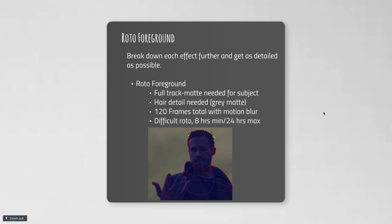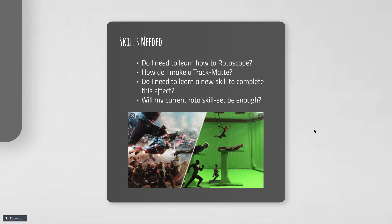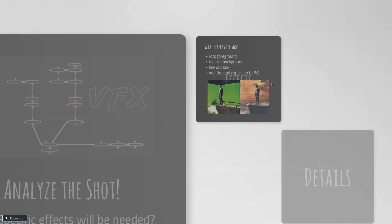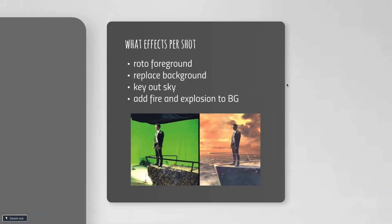I need to figure out how long it's going to take me to complete that roto. It's good to start figuring out how long it takes you to do specific effects — that's key to making sure you're able to meet whatever deadline you're setting, even if it's just a deadline for yourself. Then there's skills: Do I need to learn how to rotoscope? Do I know what a track matte is? Do I need to learn an entirely new skill? You need to know what skills are needed for each shot — roto, background replacement, sky keying, comping in fires and explosions. Make sure you or your teammates have those skills.